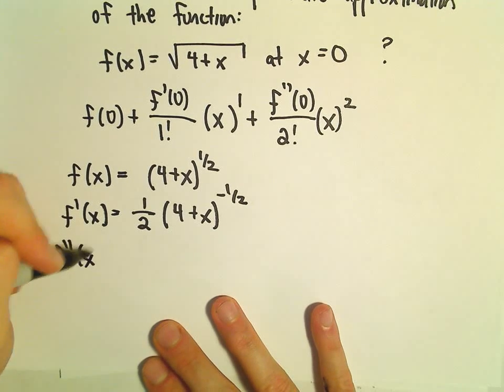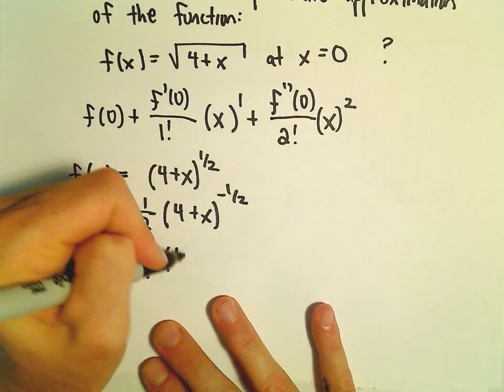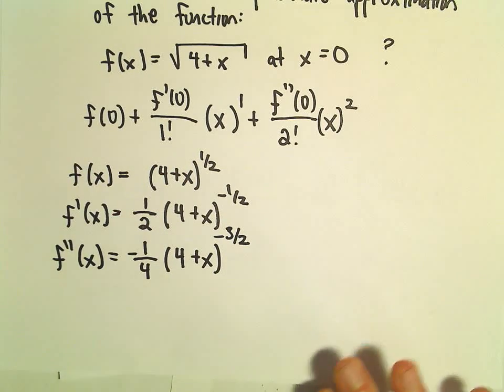Our second derivative, the negative 1 half will multiply by the 1 half and give us negative 1 fourth. Then we'll have 4 plus x. If we subtract 1 away, we'll get to the negative 3 halves.